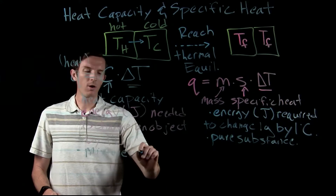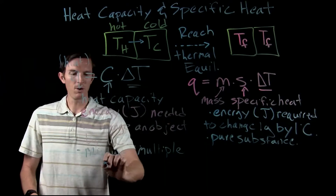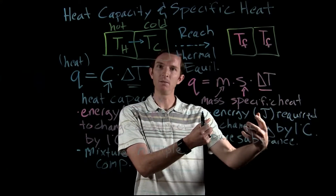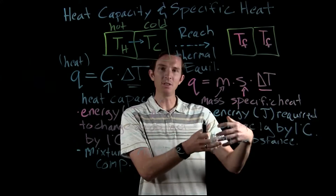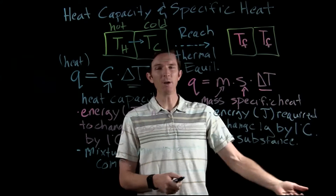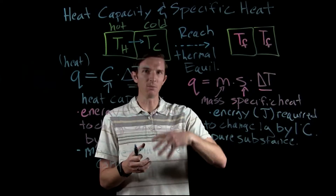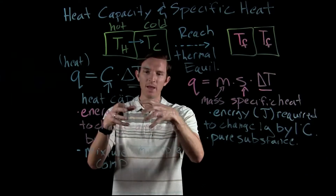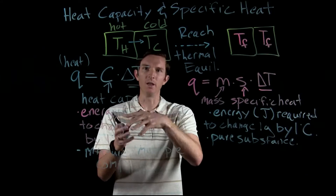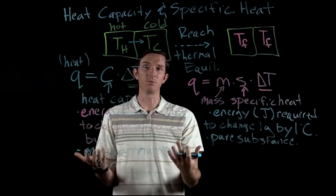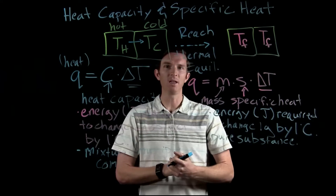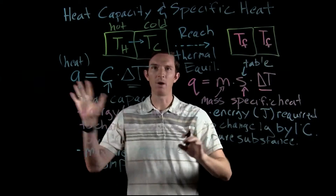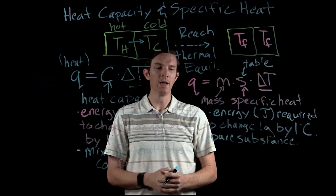For example, a pure copper pot — you can use specific heat to determine how much heat is needed to change its temperature. But once you add water, salt, and other ingredients, it becomes a mixture. Now we talk about the heat capacity of the whole system — the copper, water, salt, and everything together. For pure substances, we can simply look up the specific heat in a table.